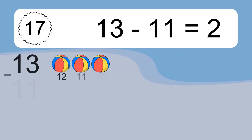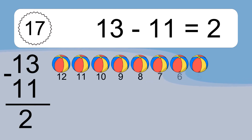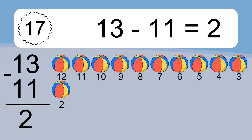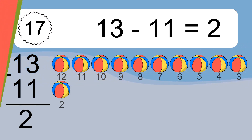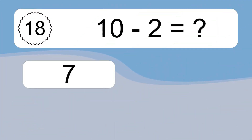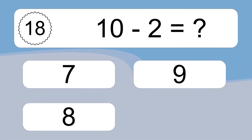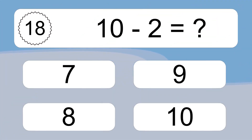13 minus 11 equals what? 13 minus 11 equals 2. Let's count it. 12, 11, 10, 9, 8, 7, 6, 5, 4, 3, 2.